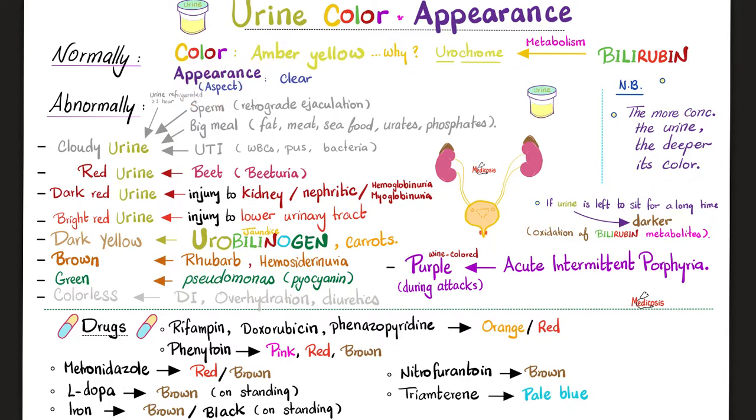What's the aspect or the appearance of the urine? Normally it should be clear, not turbid. That's the normal.